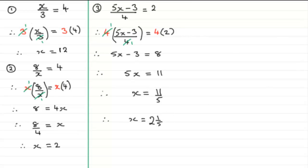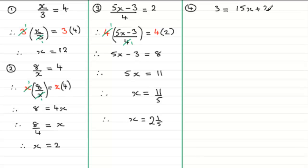For example four, we'll put an x term in the denominator: 3 equals (15x plus 2) all over 4x. We have a combination of a number and x in the denominator. You might want to pause the video and have a go yourself before checking your solution against mine.